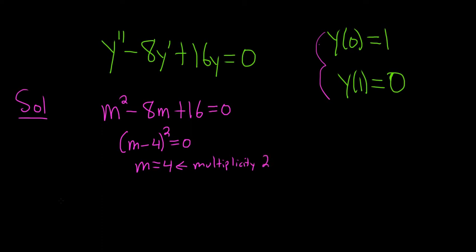So we have a repeated root. So when we write our answer down, our solution, our general solution to the DE will be c1 e to the 4x. And because it's repeated, you have to put another x. So c2 x e to the 4x. So that's our solution to our DE.